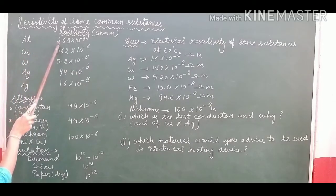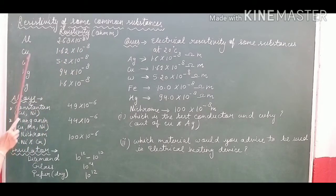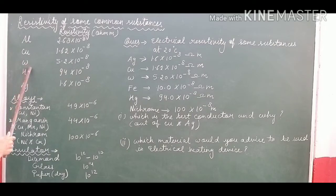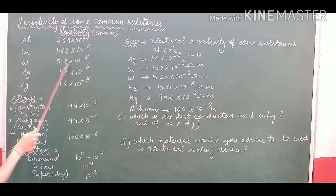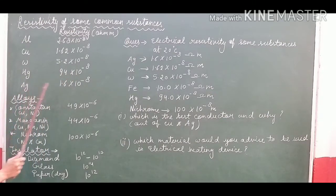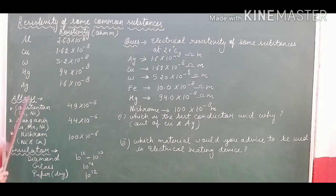Aluminium has the value 2.68 × 10⁻⁸ ohm meter. Copper: 1.62 × 10⁻⁸. W — this is the symbol of tungsten — 5.2 × 10⁻⁸. Mercury: 94 × 10⁻⁸, and silver: 1.6 × 10⁻⁸ ohm meter.